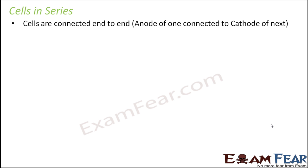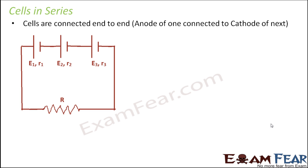When the cells are connected end to end — similar to how resistors are connected in series — that means the positive terminal of one cell is connected to the negative terminal of the other, and again the positive terminal of the next cell connected to the negative terminal of the next. As you see here: negative connected to positive, again negative connected to positive. When cells are connected in this fashion, they are said to be connected in series.